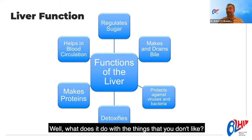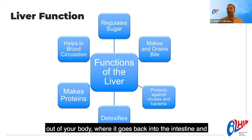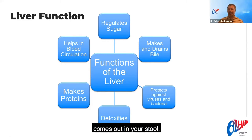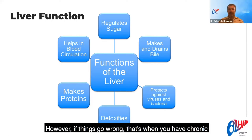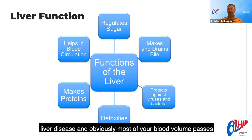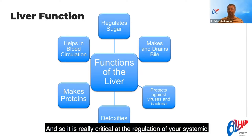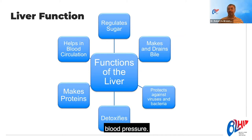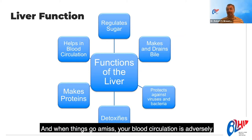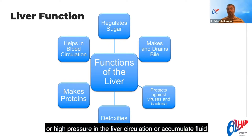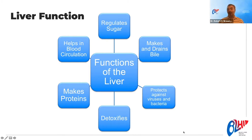What does it do with things you don't want? It generally tries to turn them into bile and excrete them out of your body, back into the intestine and out in your stool. If things go wrong, that's when you have chronic liver disease. Most of your blood volume passes through the liver, so it is critical in regulating systemic blood pressure. When things go amiss, people can develop portal hypertension or accumulate fluid in harmful ways.